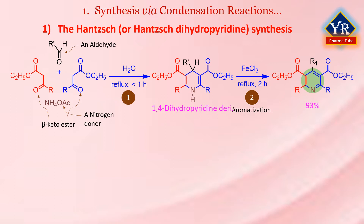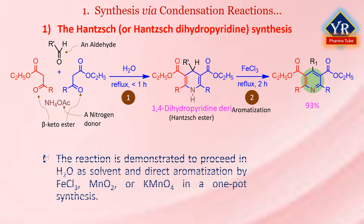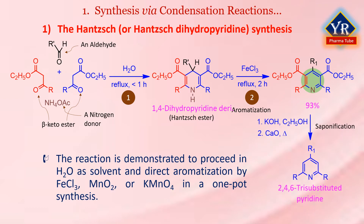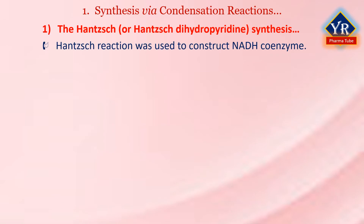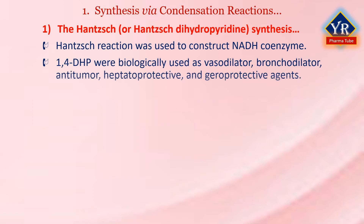A 1,4-dihydropyridine dicarboxylate is also called a 1,4-dihydropyridine compound or a Hansch ester. The reaction has been demonstrated to proceed in water as a reaction solvent and with direct aromatization by ferric chloride, manganese dioxide, or potassium permanganate in a one-pot synthesis. Saponification and decarboxylation of the 3,5-ester substituents then leads to symmetric 2,4,6-tri-substituted pyridine. The Hansch chemistry was used to construct model systems of NADH coenzyme to understand the mechanistic details of their biological reducing agent. The 1,4-dihydropyridines were identified to possess various biological activities such as vasodilator, bronchodilator, antitumor, hepatoprotective, and gyroprotective activity.